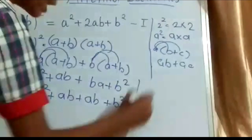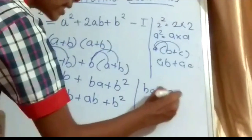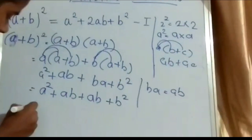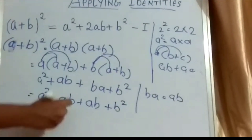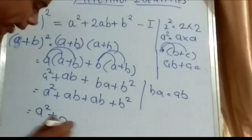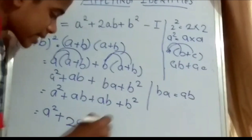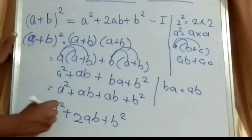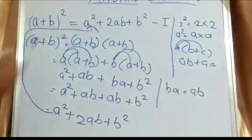That is A² + 2AB + B². So this is the derivation of identity 1: (A + B)² = A² + 2AB + B².